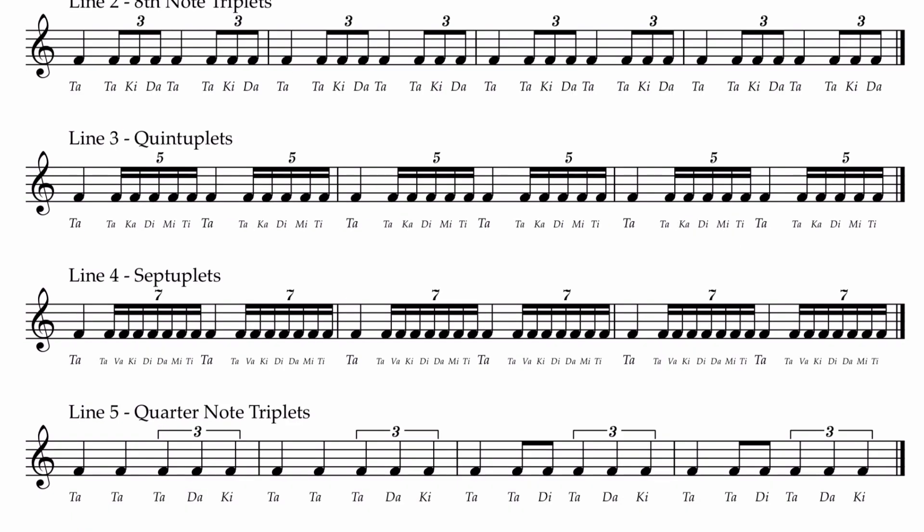Down to line two now: eighth note triplets. You say 'takida.' You see them there grouped together with one beam because they're eighth notes, and there's a little three written over them which makes it an eighth note triplet. And you say 'takida.'